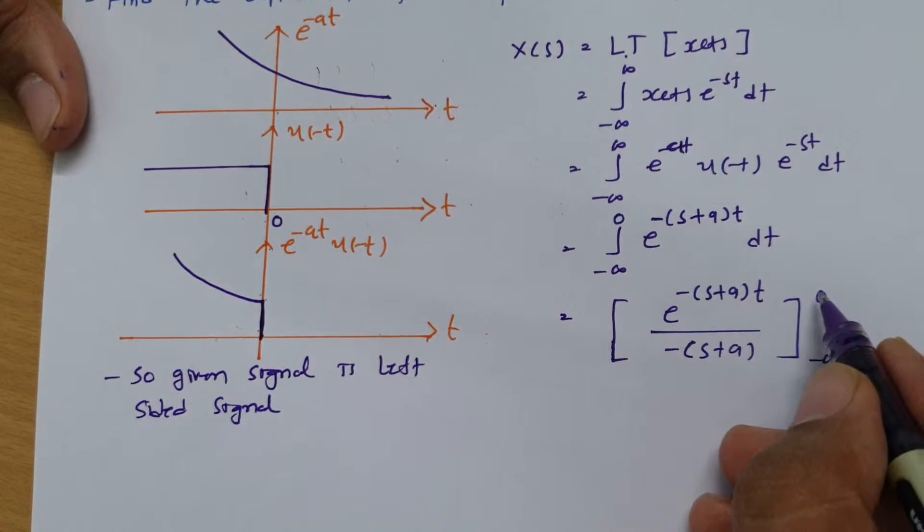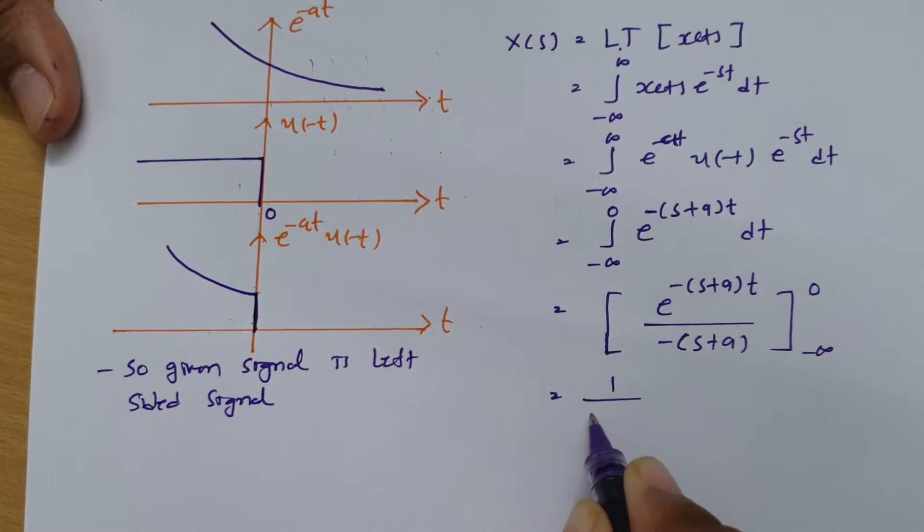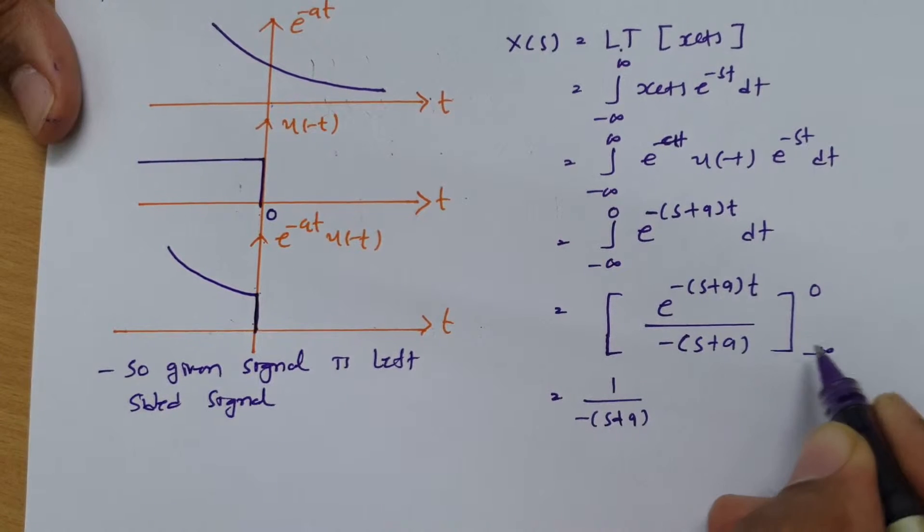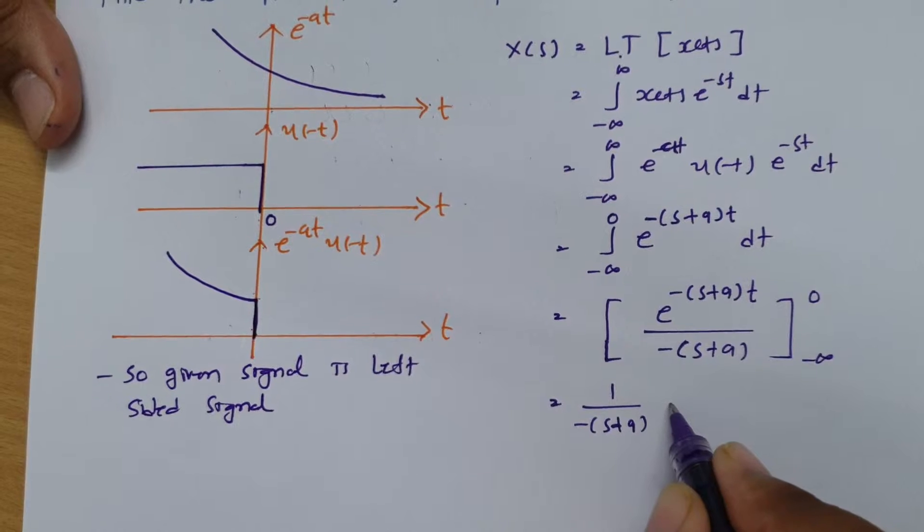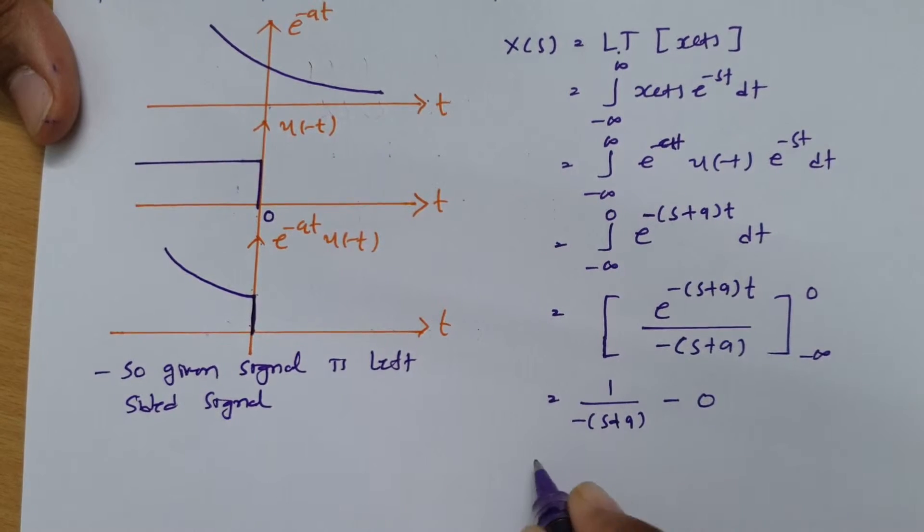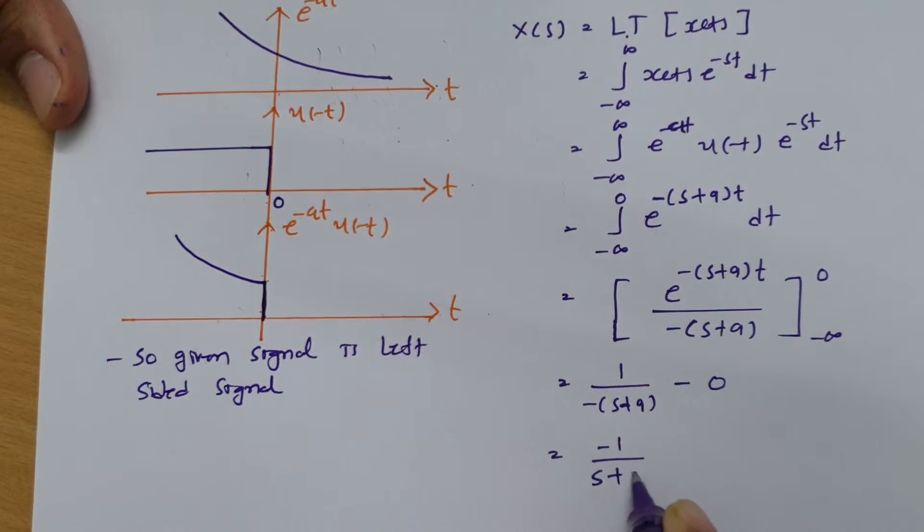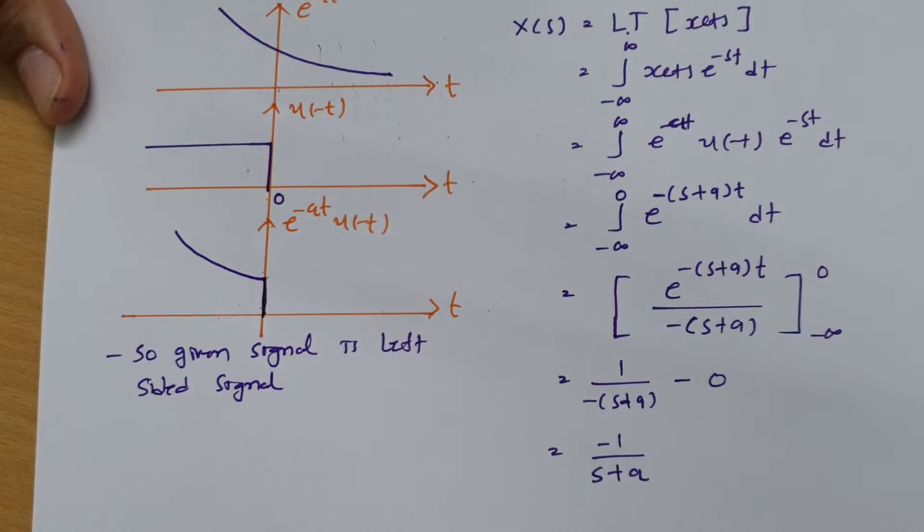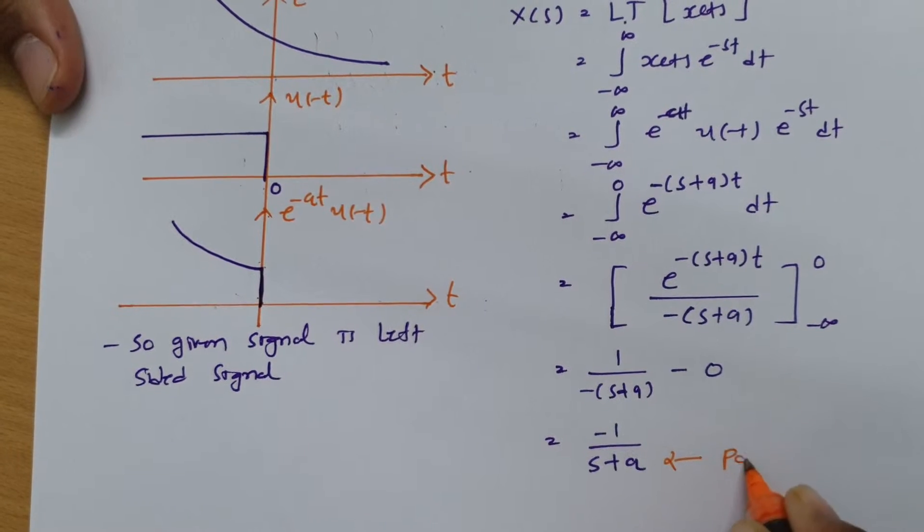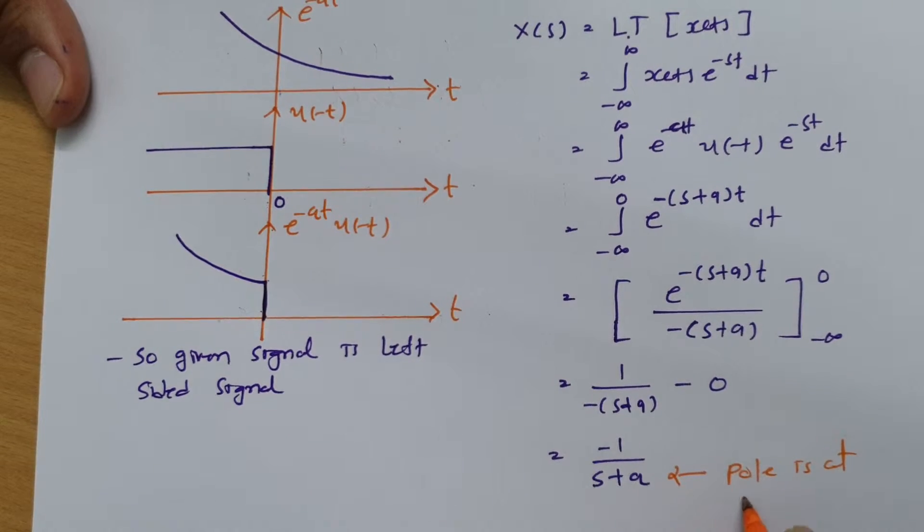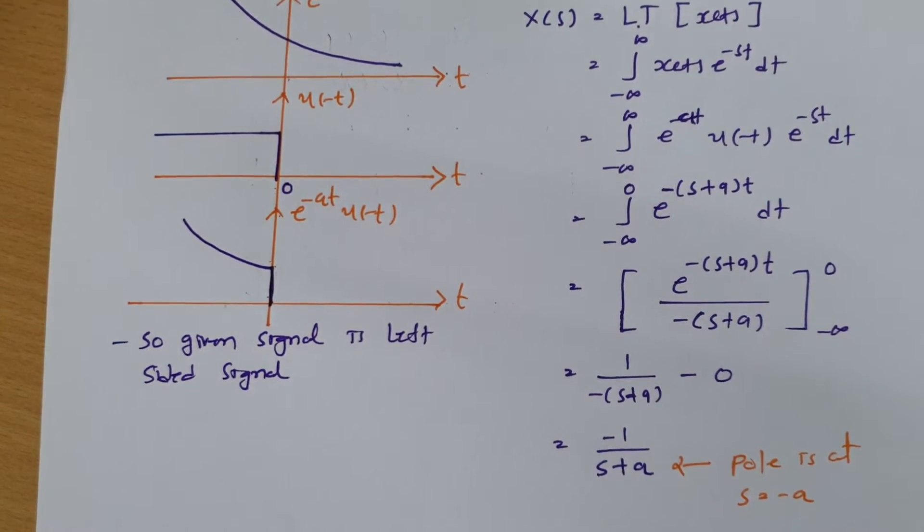Now if you place 0, then this term will become 1, so this is 1 divided by minus s plus a. If you place minus infinite, this term will become 1 divided by infinite which is 0, so we can say this is minus 1 divided by s plus a. One thing that is very clear from this Laplace transform: pole is happening at s equals to minus a.